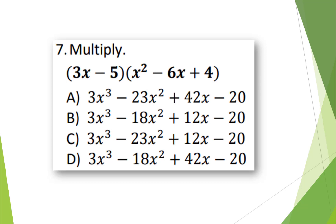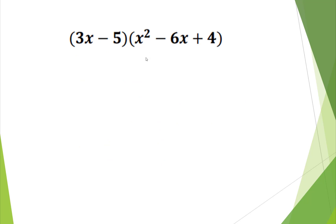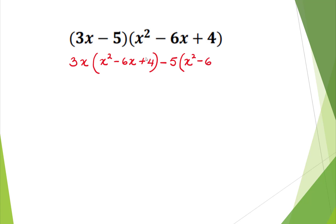Multiply 3x minus 5 times x squared minus 6x plus 4. We're going to distribute 3x, the first term, over x squared minus 6x plus 4. And then we're going to distribute negative 5 over x squared minus 6x plus 4.